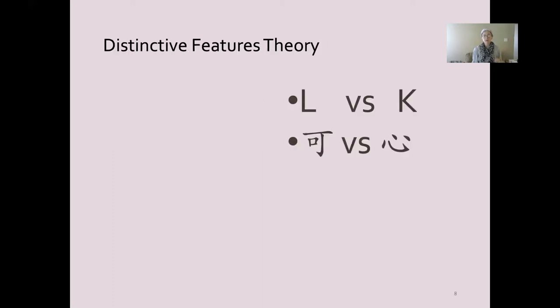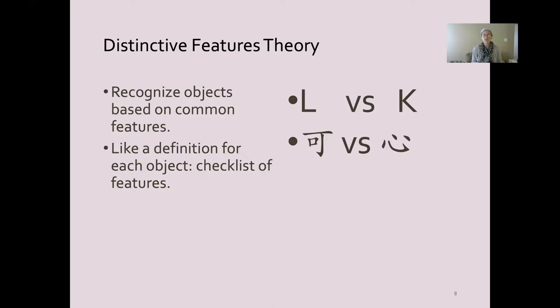Distinctive features theory is the most simple. It says that we recognize objects based on common features. It's like having a definition for each object based on a checklist of features.